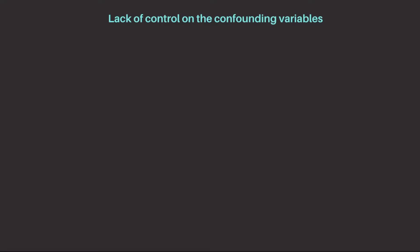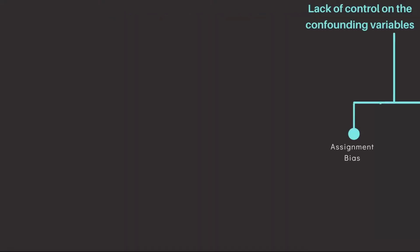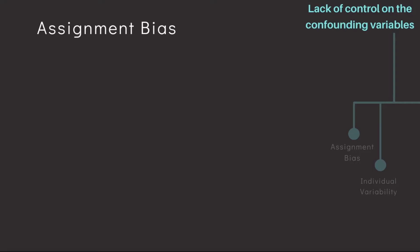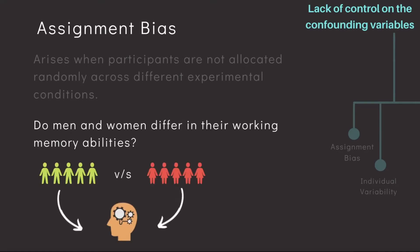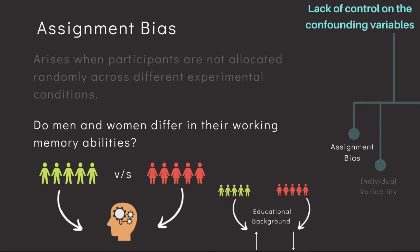There are two specific types of issues that can be difficult to control in this design and can introduce confounds. The first type is called assignment bias and the second is individual variability. The issue of assignment bias arises when participant allocation across the different experimental groups and conditions is not undertaken randomly. Imagine you are trying to study differences in working memory abilities of women versus men, and while recruiting participants, the researchers did not match the educational background, ending up recruiting men with higher educational backgrounds than women. This situation is likely to introduce assignment bias.